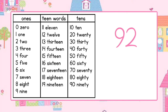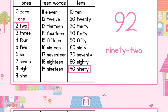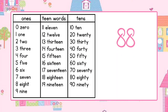This is the number 92. Let's use the chart to find and write ninety, and find and write two. This number is 88. Let's use the chart to find and write eighty, and then let's use the chart again to find and write eight.